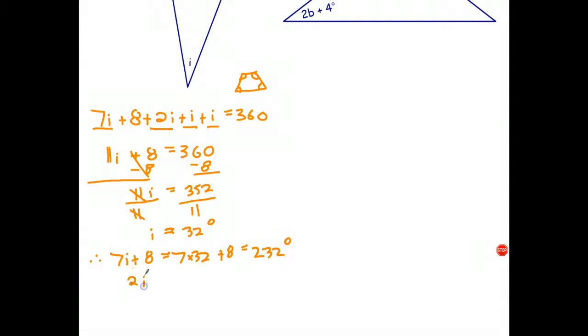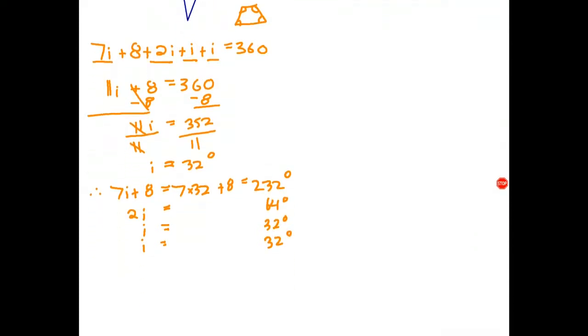2 times i, well 2 times 32 is just 64 degrees. And each of the other two, which are equal to i degrees, is 32 degrees. So that's the size of the four angles. And the next thing we want to do is check that, just to finish off.